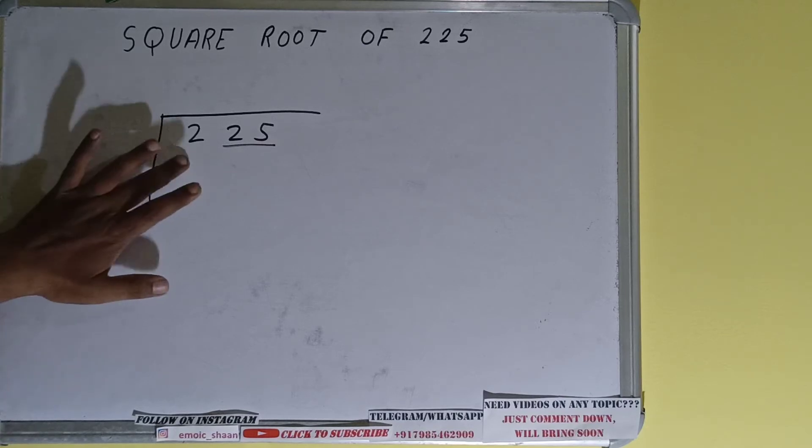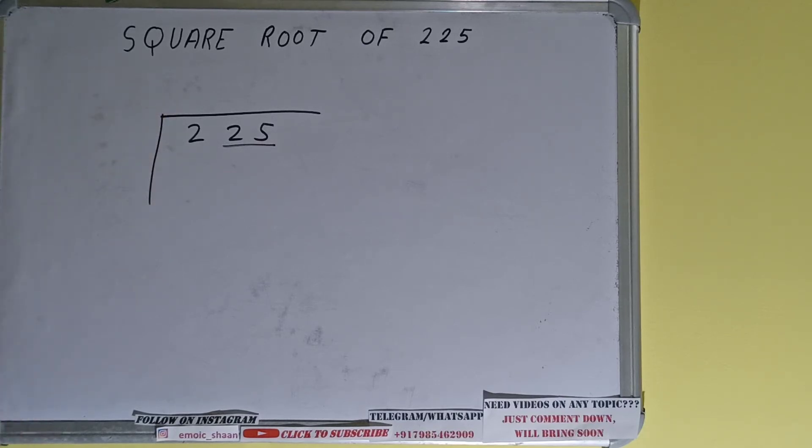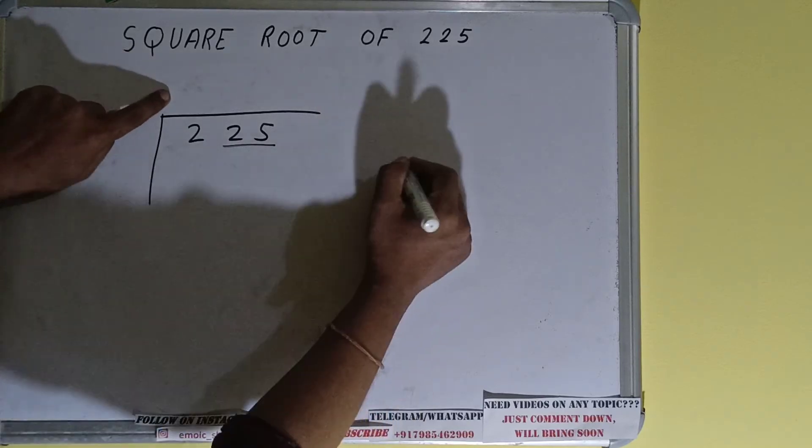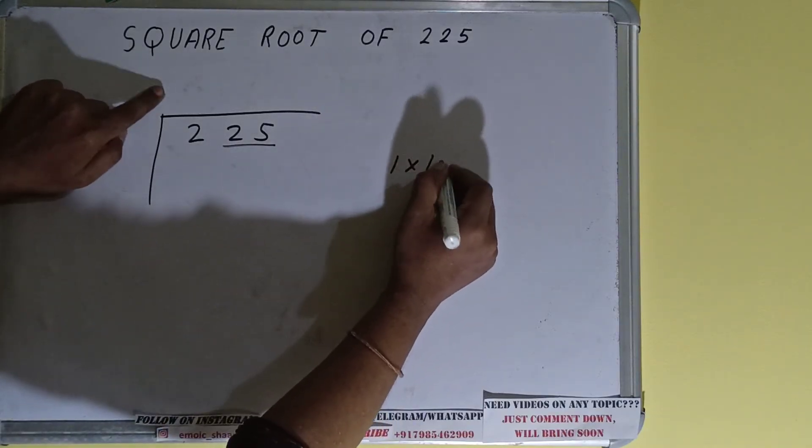So first we'll divide this two and then we'll bring down numbers in pair. The rule is whatever number we write here we have to write here as well. If I write one here and one here it will give one.